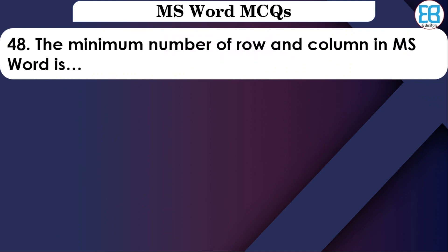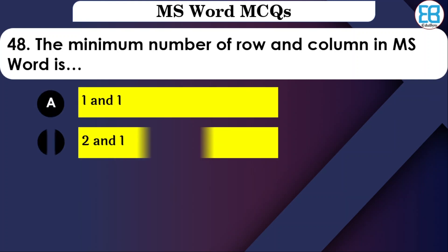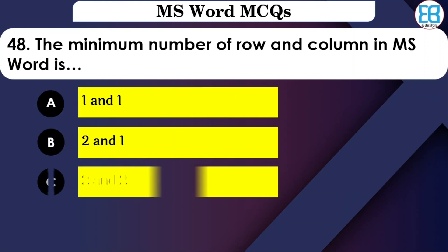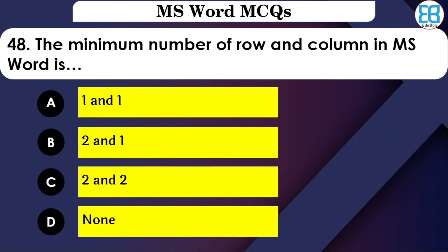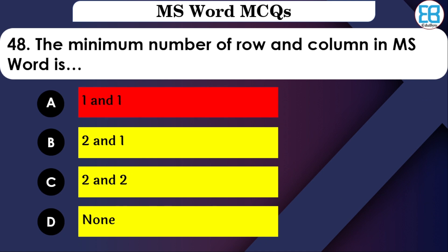What is the minimum number of rows and columns in an MS Word table? The options are: One and One, Two and One, or Two and Two. The correct option is One and One — the minimum is one row and one column.